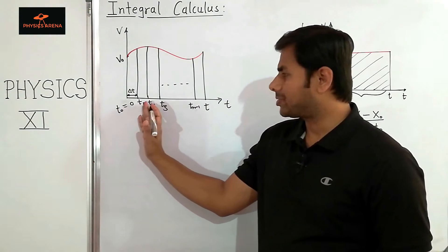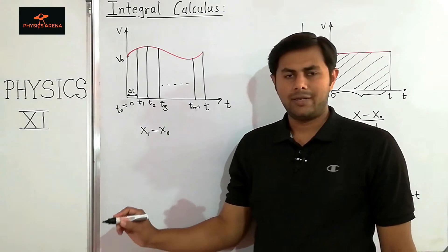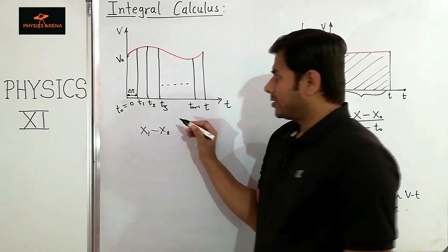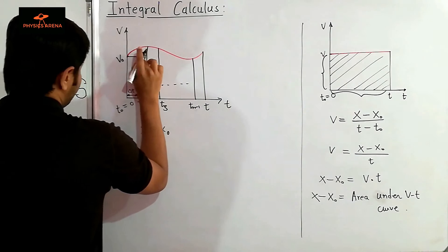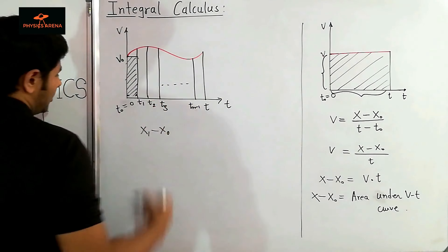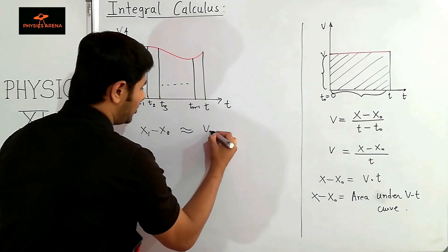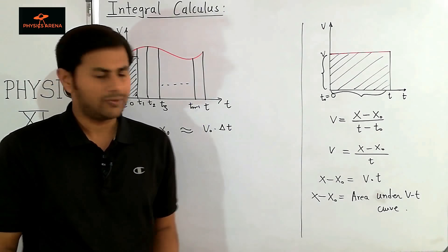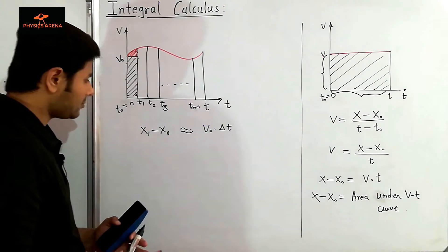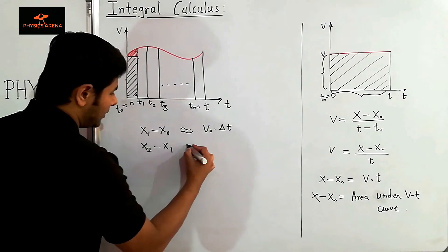Now this was a simple curve. Every time our velocity versus time curves will not be this simple — they can be very complicated. For example, suppose we have this velocity versus time curve like this, with starting velocity v₀. What people have done smartly is that they broke this complete time interval into n number of small identical pieces. Suppose this time interval is delta t.